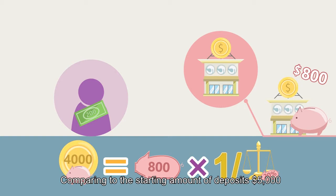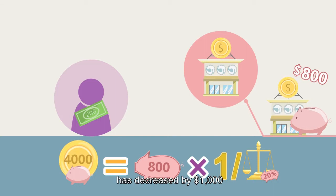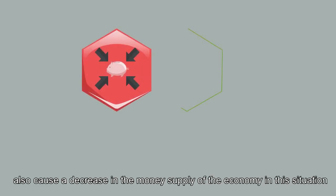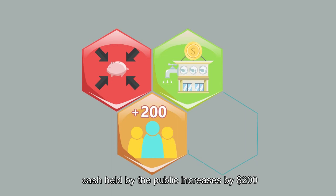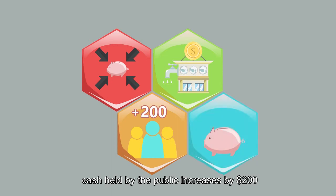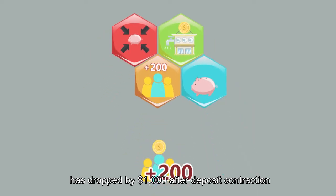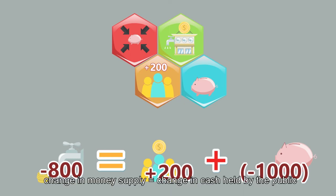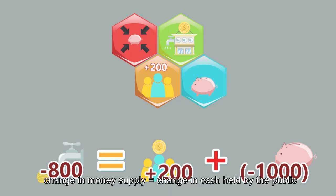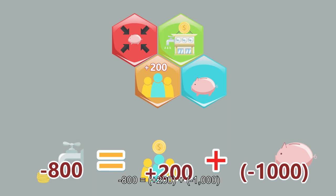$4,000 equals $800 times 1 divided by 20%, which equals $4,000. Compared to the starting amount of deposits of $5,000, the amount of deposits within the whole banking system has decreased by $1,000. We've also mentioned that deposit contraction will cause a decrease in the money supply. When the public withdraws $200, cash held by the public increases by $200. However, the total amount of deposits has dropped by $1,000 after deposit contraction. Therefore, there is a decrease of $800 in the overall money supply. Change in money supply equals change in cash held by the public plus change in deposits: −$800 = $200 + (−$1,000).